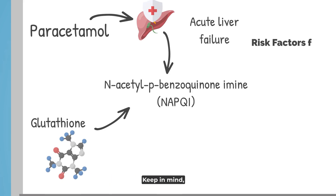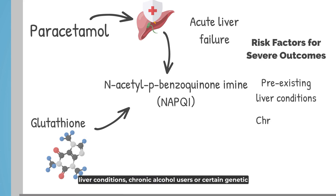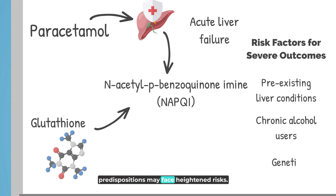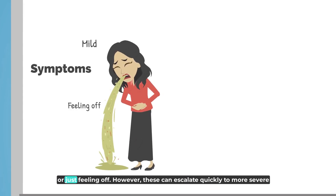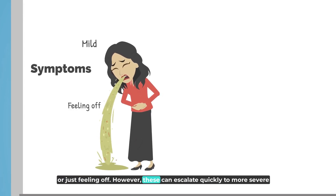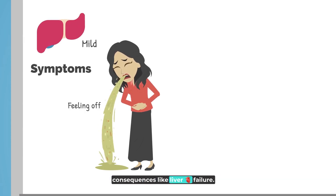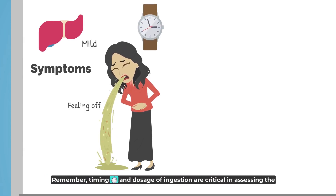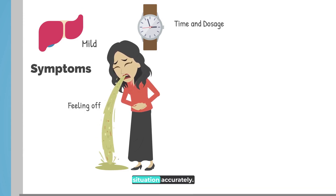Keep in mind, individuals with pre-existing liver conditions, chronic alcohol users, or certain genetic predispositions may face heightened risks. Patients might initially experience symptoms that seem mild — nausea, vomiting, or just feeling off. However, these can escalate quickly to more severe consequences like liver failure. Remember, timing and dosage of ingestion are critical in assessing the situation accurately.